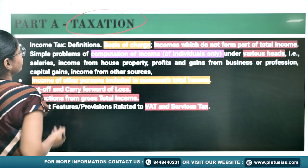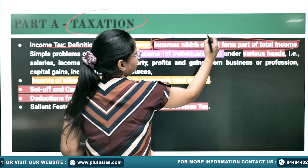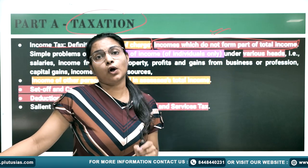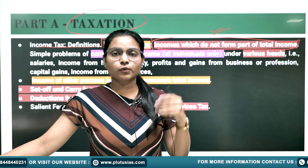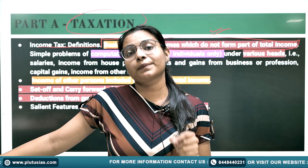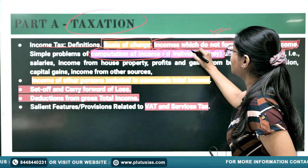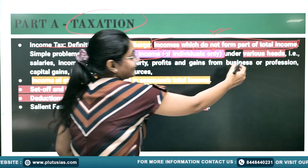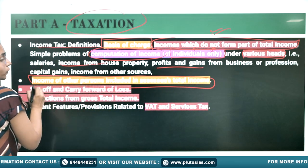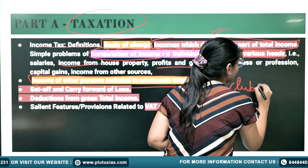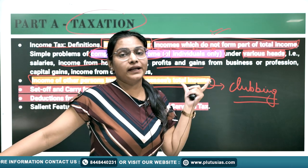Then comes the Taxation part. Income Tax definitions, basis of charge, and income which does not form part of total income are covered. I am showing you specific topics so you know which ones need to be prepared and to what depth. Then it asks about computation of income — only for individuals, not businesses. Under various heads, the different heads are given. Also covered is income from other persons included in the assessee's total income, which is about clubbing provisions. Prepare two-pager notes for each topic and also solve numericals for Taxation.